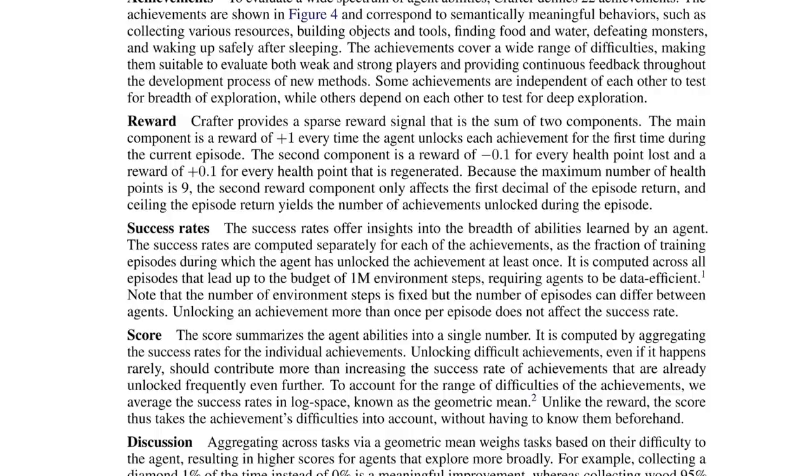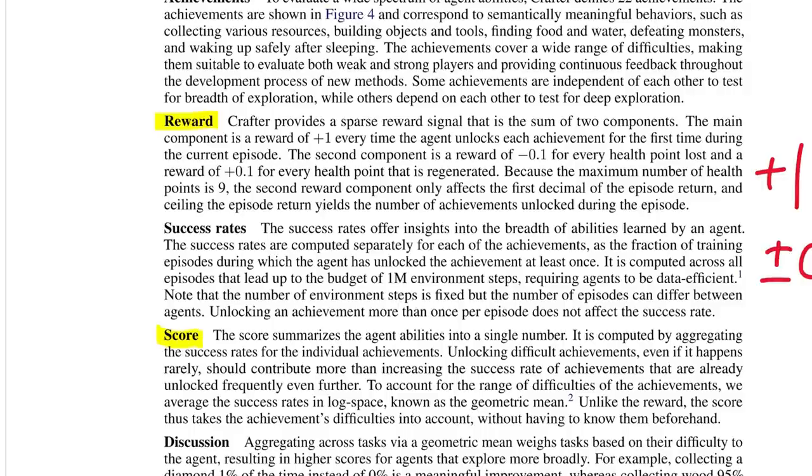Agents are evaluated by both the reward they get within an episode and also by a score. Whenever an agent gets a new achievement for the first time in an episode, it gets a plus 0.1 reward whenever it gains or loses health. And the score is a number from 0 to 100 that indicates how frequently the agent is able to attain different achievements. It's a geometric mean that prioritizes getting some success for all achievements over consistently getting easy achievements.